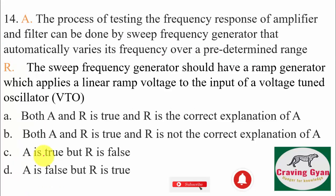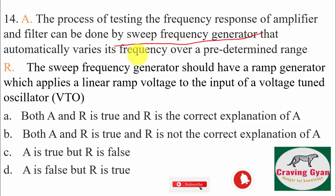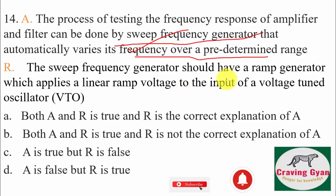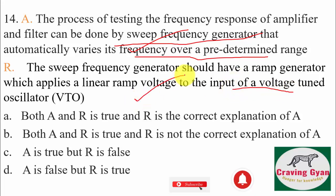Fourteenth question — assertion/reason: the assertion states that the process of testing the frequency response of amplifier and filter can be done by a sweep frequency generator that automatically varies its frequency over a predetermined range — this is true. The reason states that the sweep frequency generator should have a ramp generator which applies a linear ramp voltage to the input of a voltage-tuned oscillator — also correct. The reason is the correct explanation for the assertion, hence option A is correct.